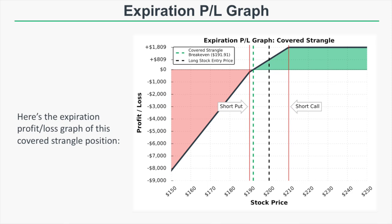If the stock price falls to $191.91, we'll have an $8.09 loss on our shares but make $809 on the strangle, so the position breaks even — the strangle profit completely offsets the loss on the shares.